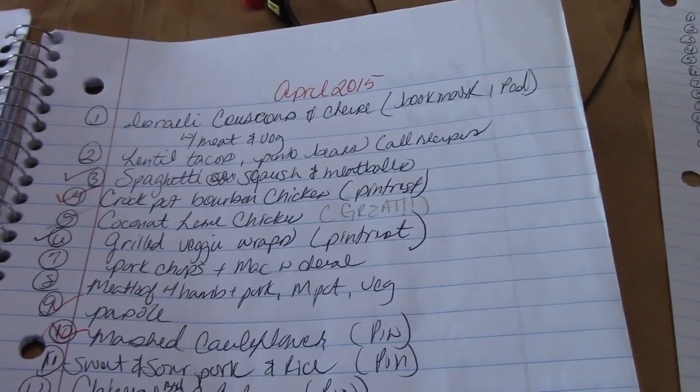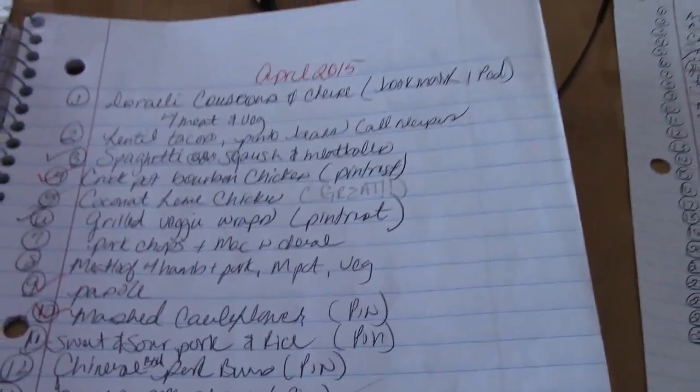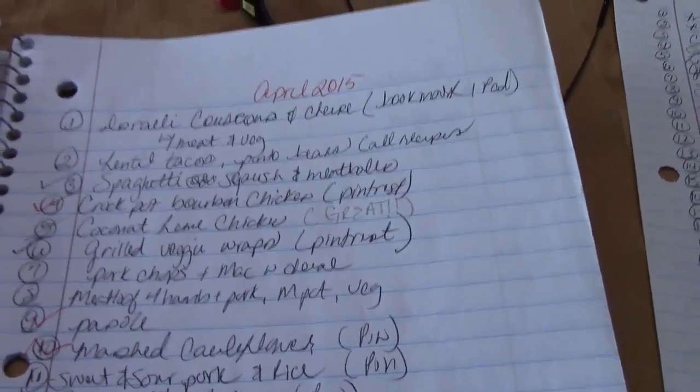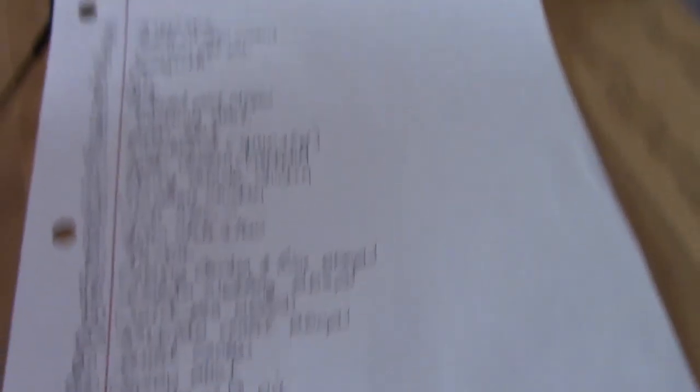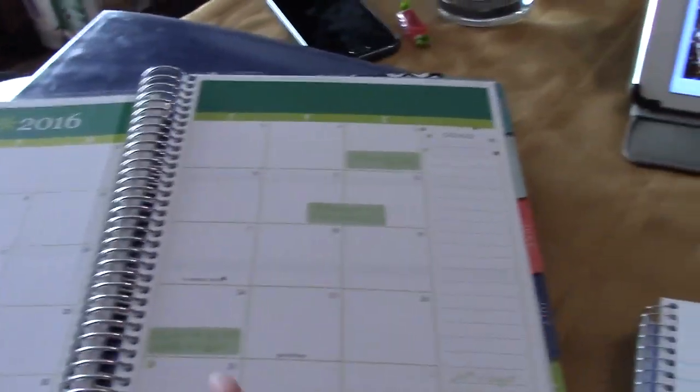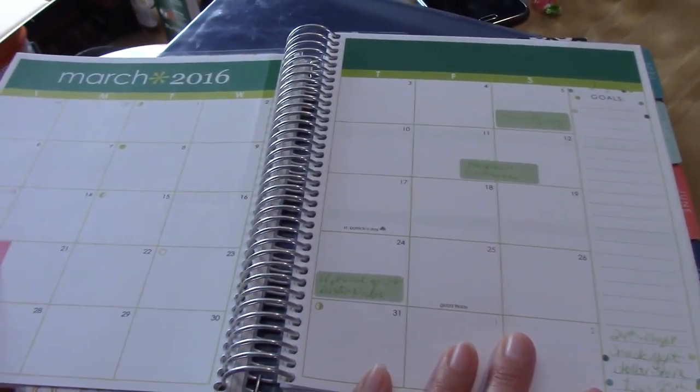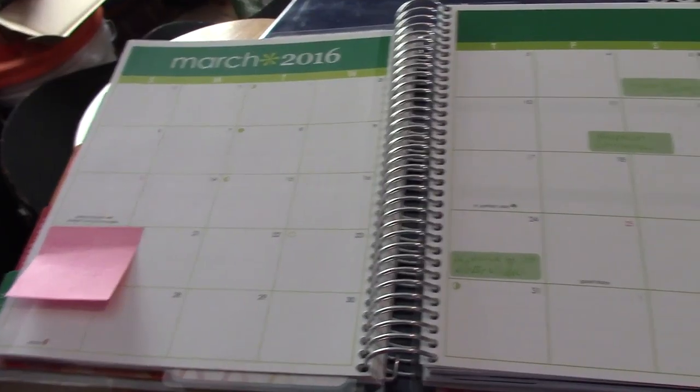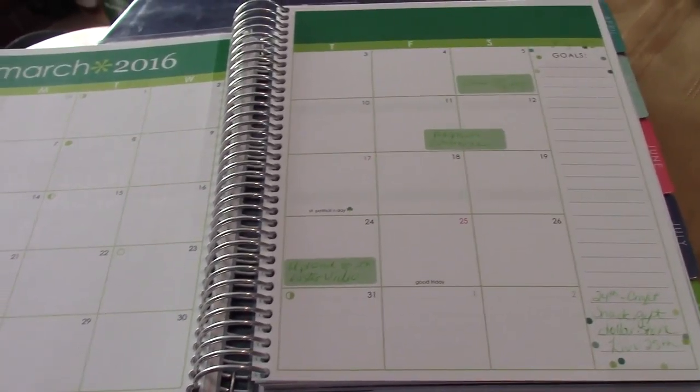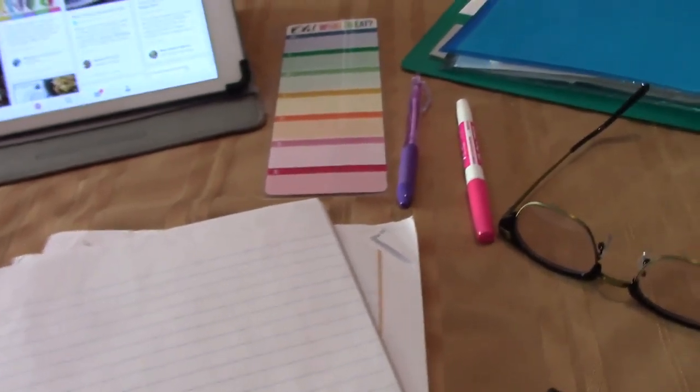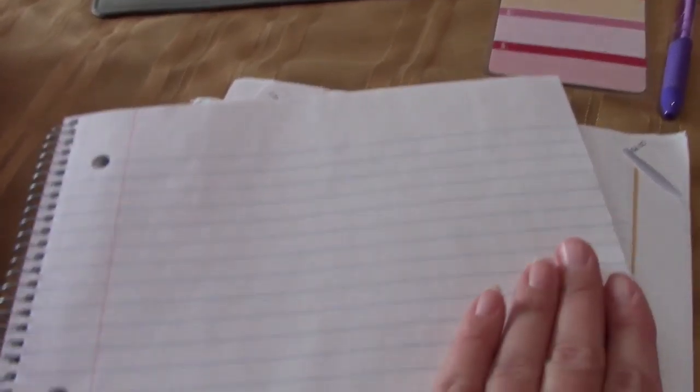So anyway, I put little check marks or mark out when I make it, and I like to save these so I can go back and reference what we've been eating. I don't like to eat the same things all the time. There's very few meals that I make repeatedly, which is good because we get lots of variety, but it's bad because I don't have a whole lot of repertoire of recipes that we reuse.